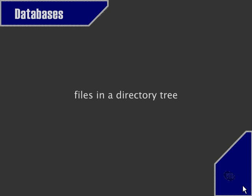Another example is files in a directory tree, such as on your computer's hard disk drive. For instance, on a Windows machine you may have a directory structure within your hard disk C drive — that would be one way of structuring data. Another database we use in everyday life is the system that stores your account details in your bank's systems, which is of course a much more complex kind of database system.